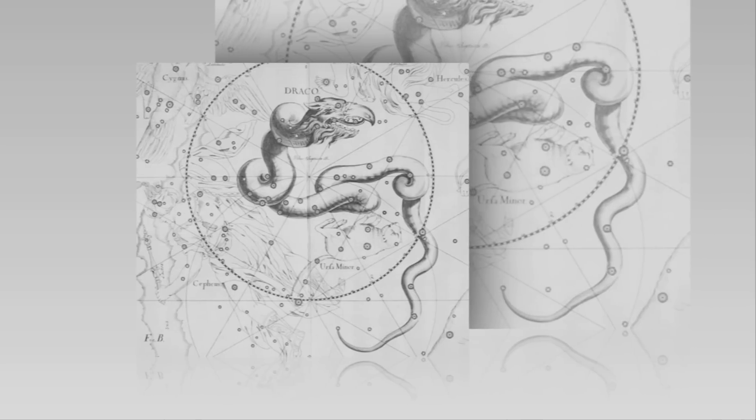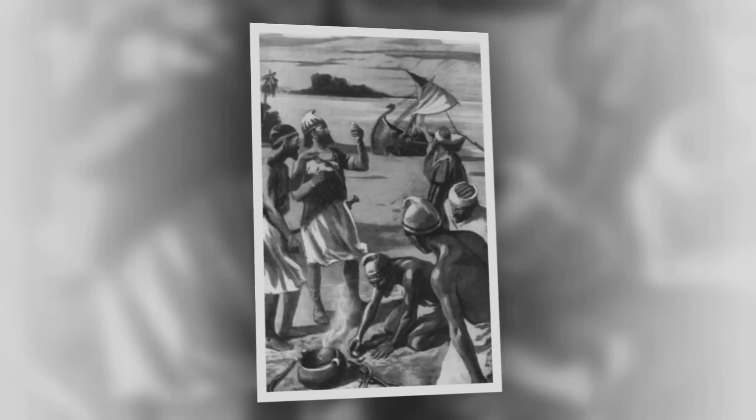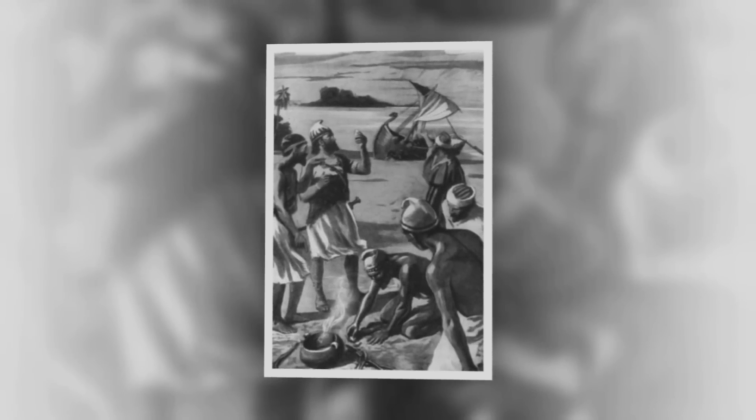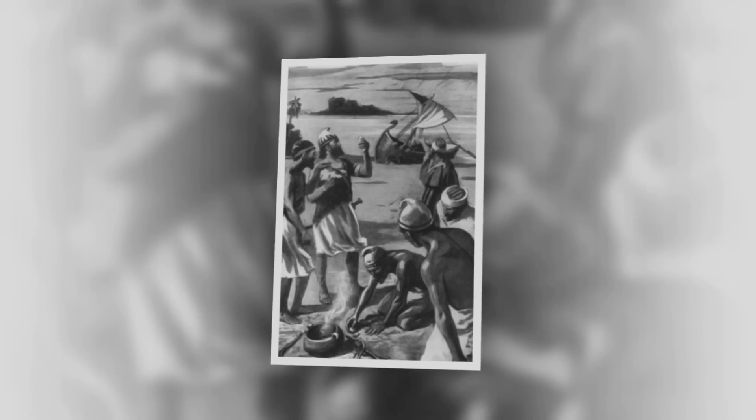The Greeks also sometimes referred to Ursa Minor as the Phoenician. Phoenicians used Ursa Minor for navigation more than they did Ursa Major because, even though it was smaller and fainter, Ursa Minor was closer to the North Pole and a better pointer to the North.